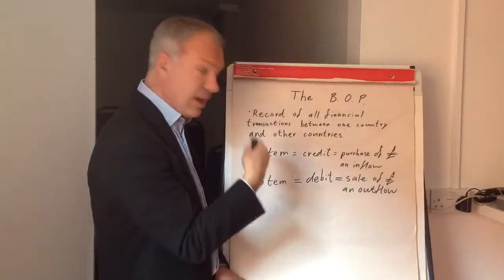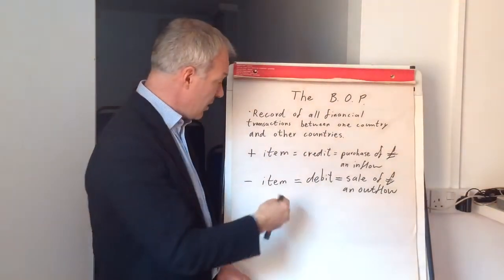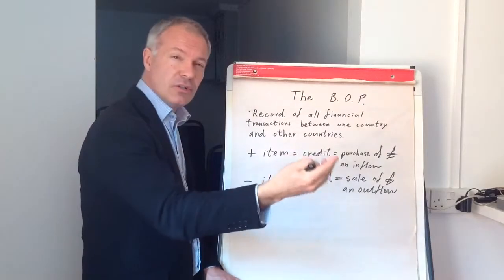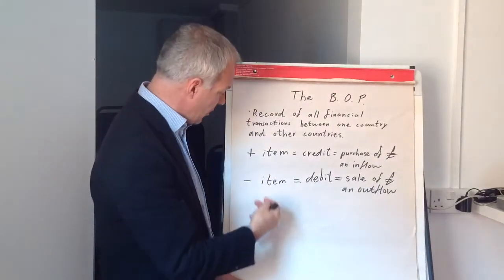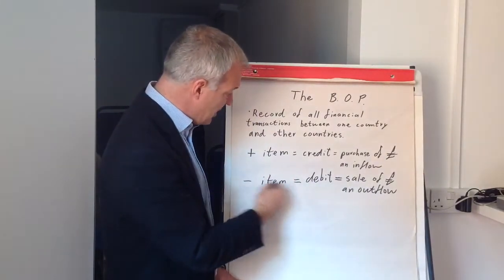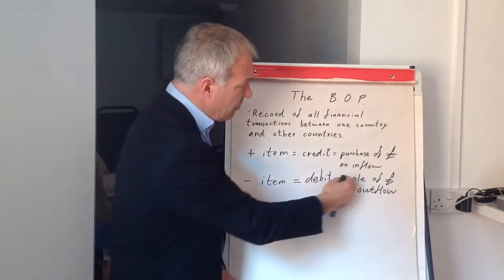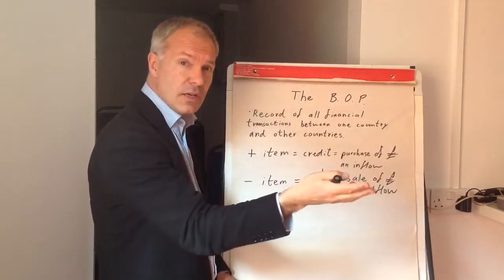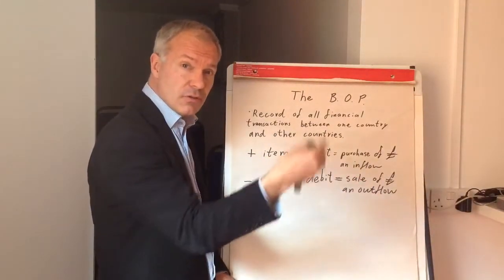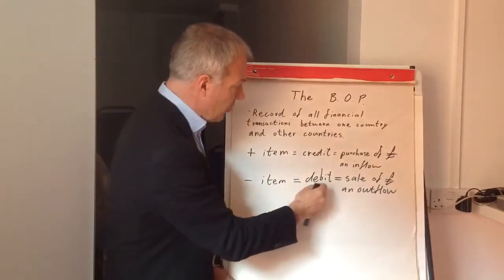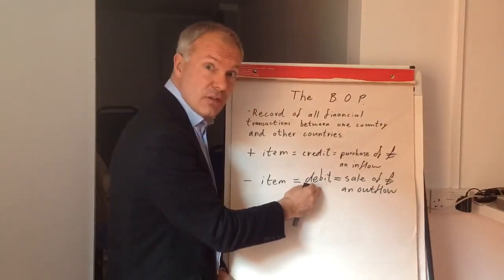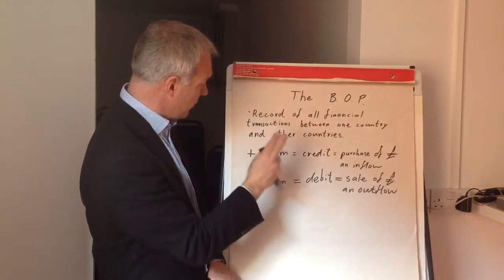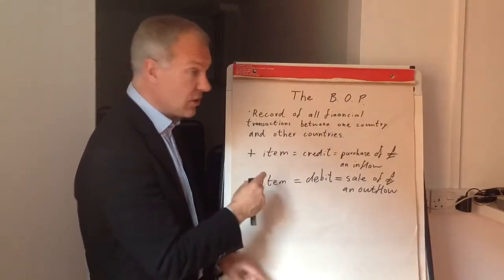However, if we had an import to the UK, say of nice French Burgundy wine to Britain, that would be a negative item, because it gave rise to a sale of pounds in order to buy euros to buy the wine. So that would be a debit item on the balance of payments. It's important to know what is a credit and what is a debit item.